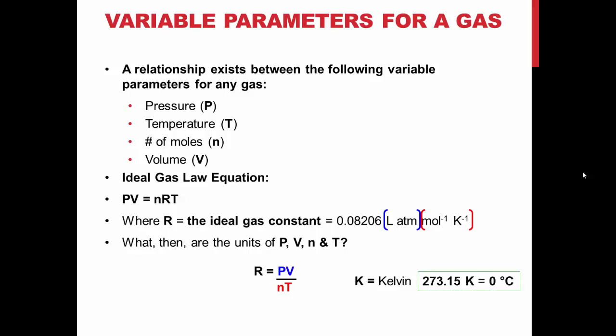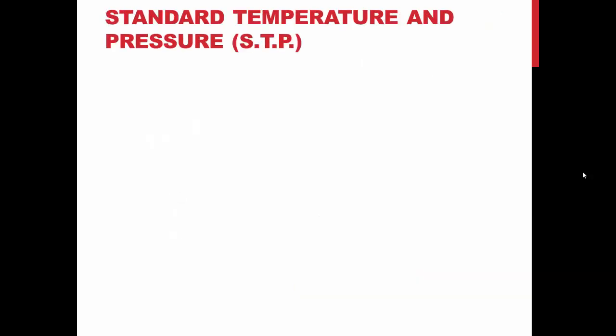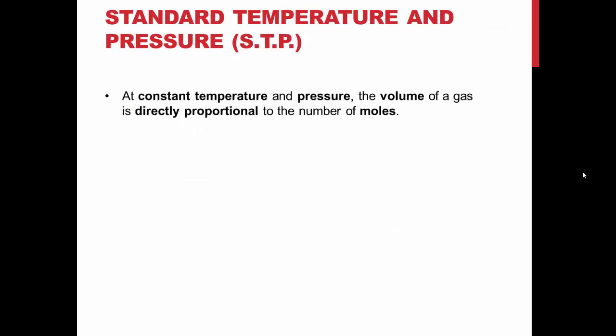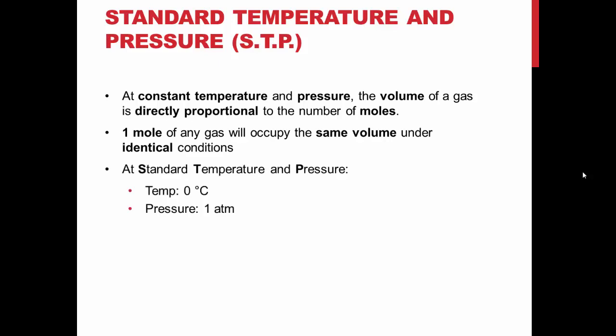Most gases obey this law at low pressures and relatively high temperatures. If temperature and pressure are kept constant, the volume of a gas is directly proportional to the number of moles present. At values of standard temperature and pressure, which is defined as 0 degrees Celsius, or 273.15 degrees Kelvin, and 1 atmosphere of pressure, one mole of an ideal gas occupies a volume of 22.4 liters.